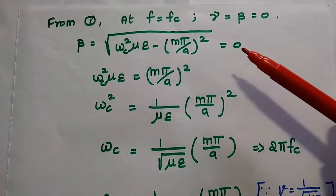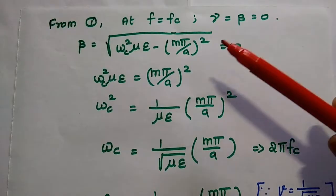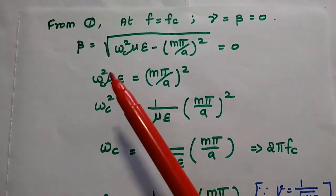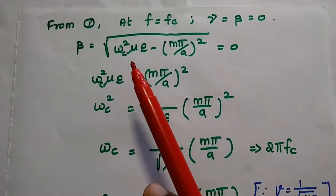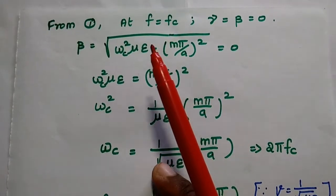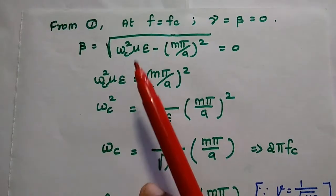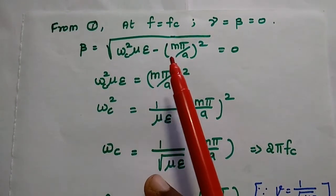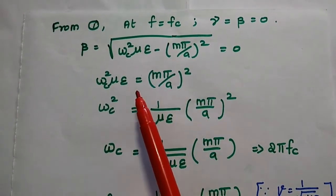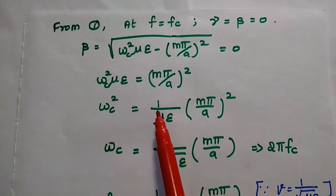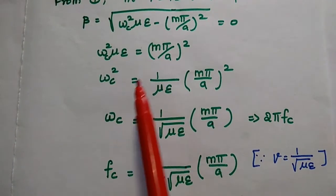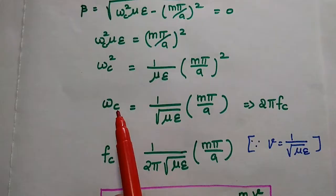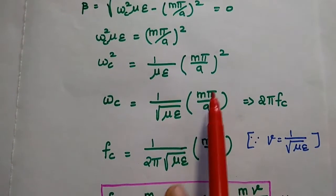Now we are going to find out the cutoff frequency from the first equation. At cutoff frequency, f = fc and γ = β = 0. From the second equation, β = √(ωc²με − (mπ/a)²) = 0. We can equate these two terms, then move με to the other side as denominator to get ωc² = (1/με)(mπ/a)². Taking the square root on both sides, ωc = (1/√(με))(mπ/a).